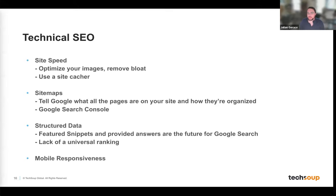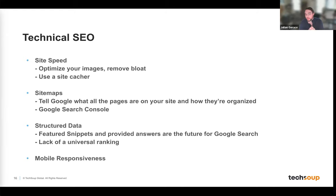For technical SEO, these are the configuration things you need to do to make sure your site is technically sound. One big area is site speed. One of the biggest culprits for slow sites is large images — not just in dimensions but in file size. Optimize your images, keep them under one megabyte if possible, and look into whether your host offers a site cache. A cache is a copy of your site served ready to go, which speeds up delivery to users significantly.